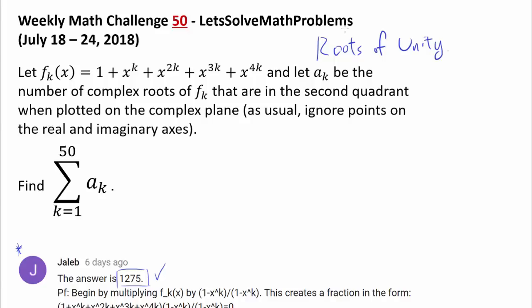So you may say maybe we're going to have to look at roots of unity. But let's read on for now. Let a sub k be the number of complex roots of f sub k that are in the second quadrant when plotted on the complex plane. As usual, ignore points on the real and imaginary axes — we'll keep this in mind to make sure we're not counting any points on the axes. And we want to find the sum from k equals 1 to 50 of a sub k.